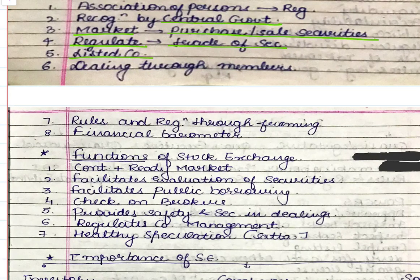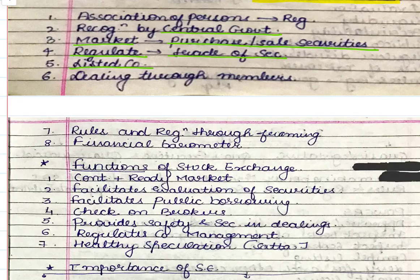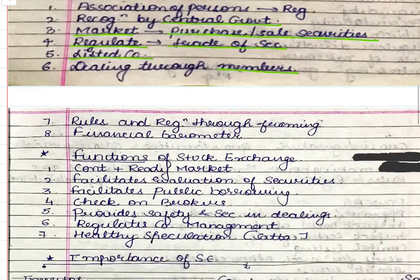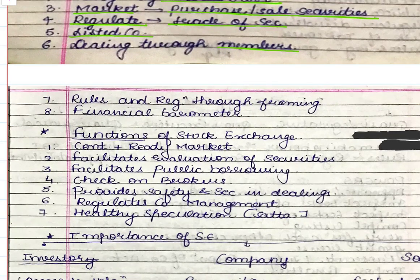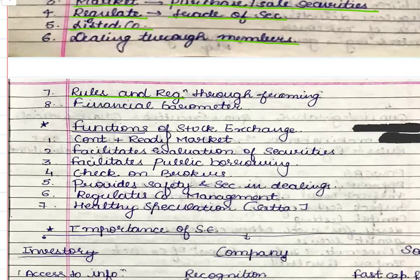How do stock exchanges work? They work through members - they have members scattered throughout the country. These members make deals, purchasing and selling on behalf of the stock exchange. Rules and regulations are formed and these stock exchanges work and abide by these rules and regulations, which are as per the SEBI guidelines. These stock exchanges act as the financial barometer of the country.